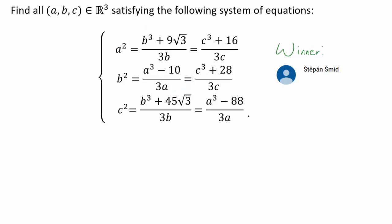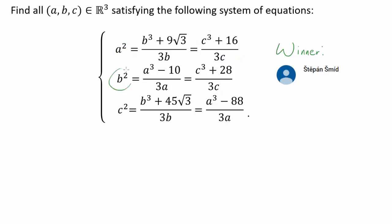Later on, when we want to look at A and C or B and C, we can repeat the same argument. For A and C, we can look at the corresponding pair of equations. And for B and C, we can do the same. This nice symmetry allows us to repeat our argument, given that it works out the first time.